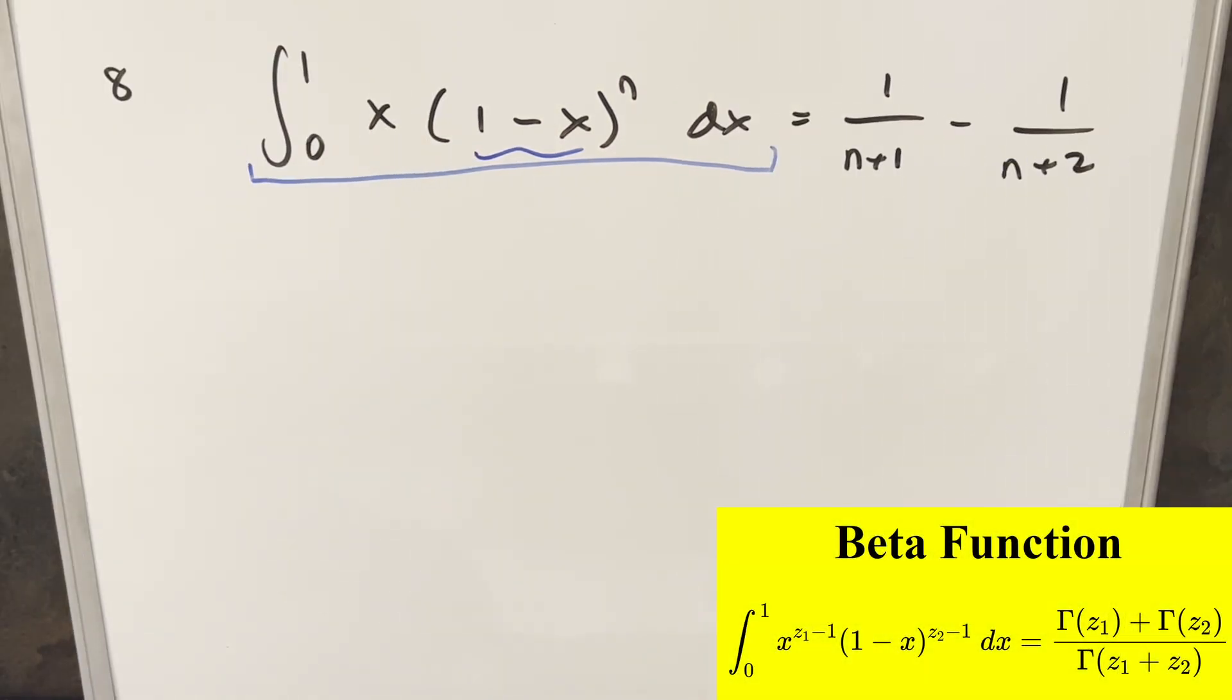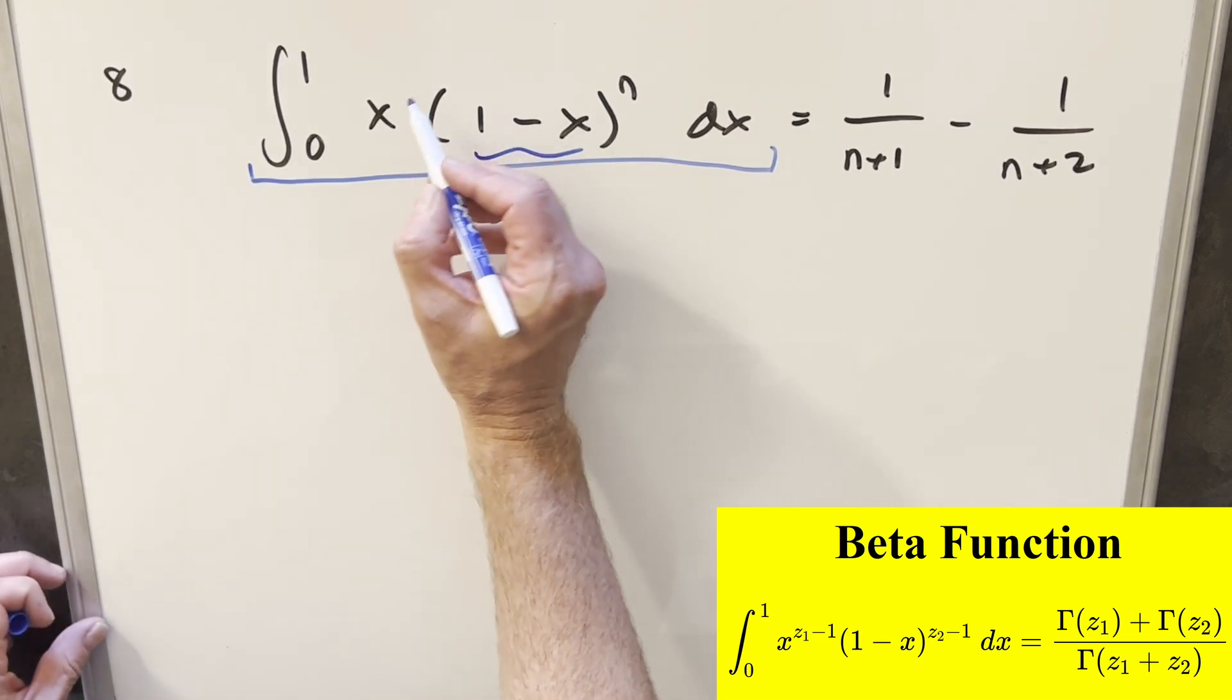And now next, I'll move on to method number 2. We'll do this using the beta function real quick and see if we can get back to the same answer. Now, one thing we need to do, we just need to do a slight change on the exponents.